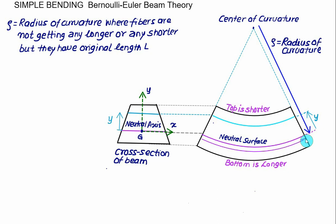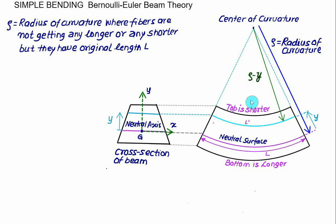We assume the length of the neutral surface equals L, so the original length is L. The neutral surface passes through the centroid. The fiber at distance Y has a new length L prime, with radius of curvature equal to rho minus Y from the center of curvature. The angle theta is common to all fibers — top, bottom, neutral, or any fiber. Only the radius of curvature changes: smaller for the top fiber, larger for the bottom, and exactly rho at the neutral surface.